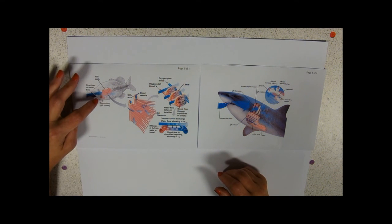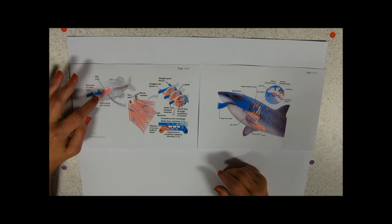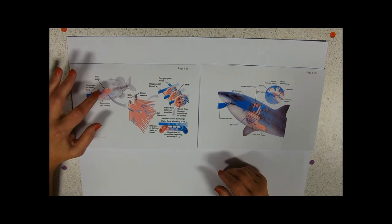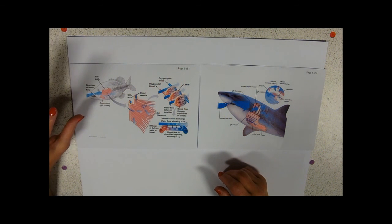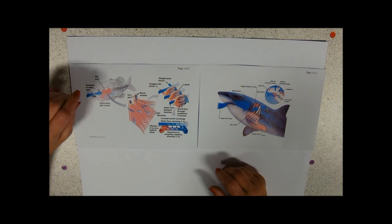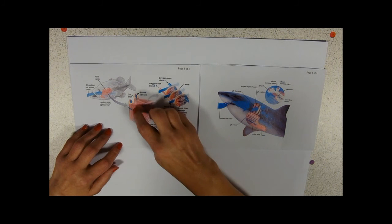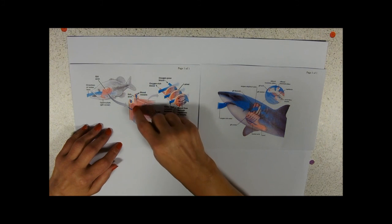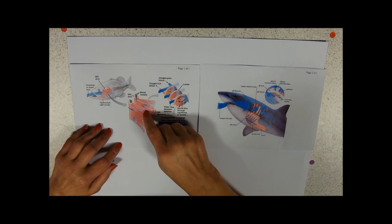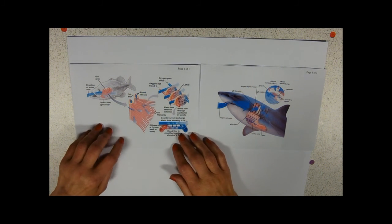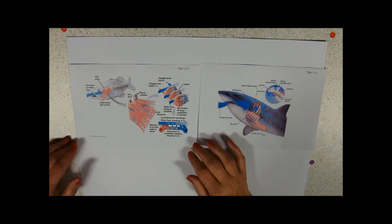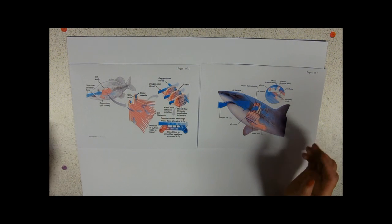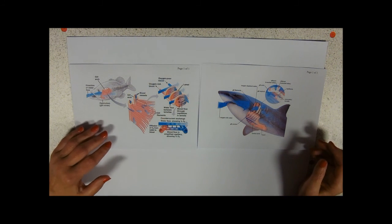And behind each operculum, we have four what are called gill arches. They're supporting the fish gill, and you'll have seen those in the dissection. And on each gill arch, there's a double row of gill filaments. And they can vary in number, so the more gill filaments you've got, the more surface area, so you've got more gas exchange you can do.